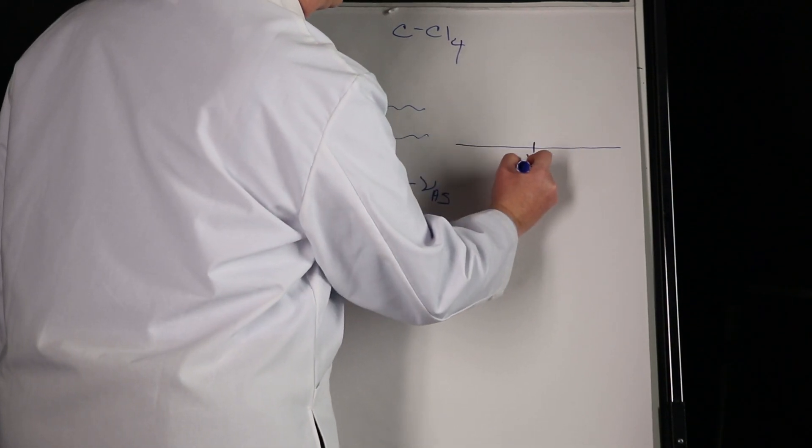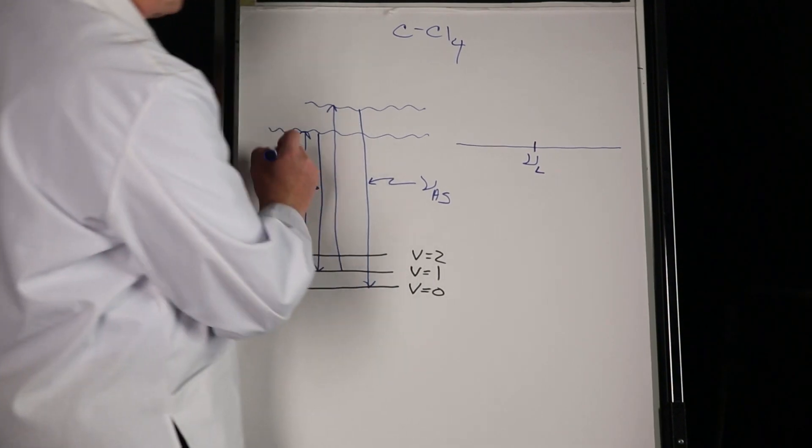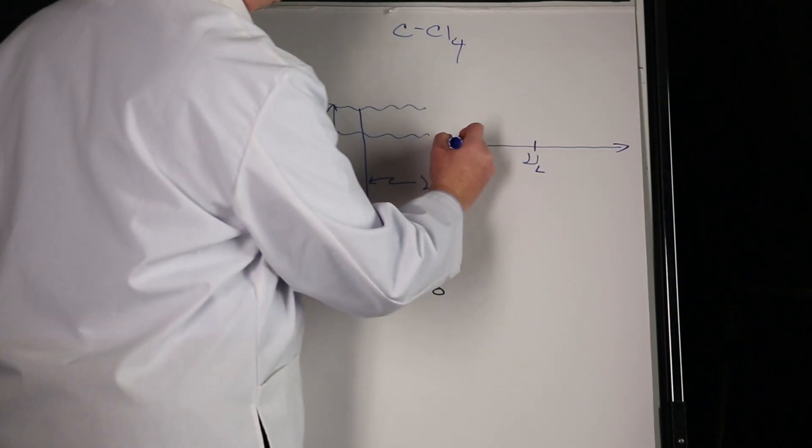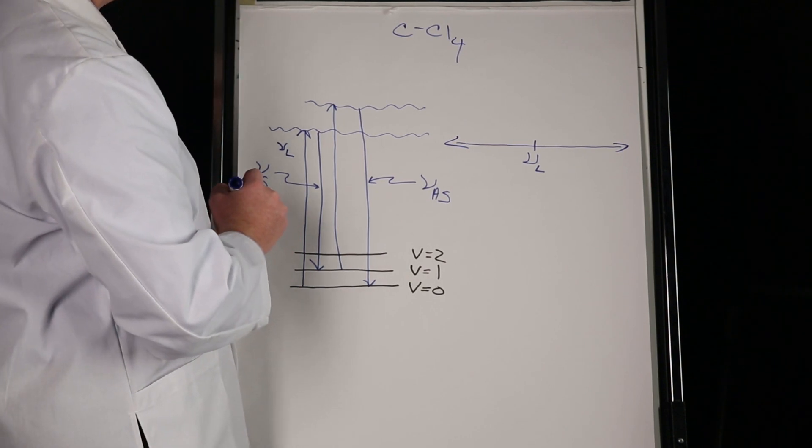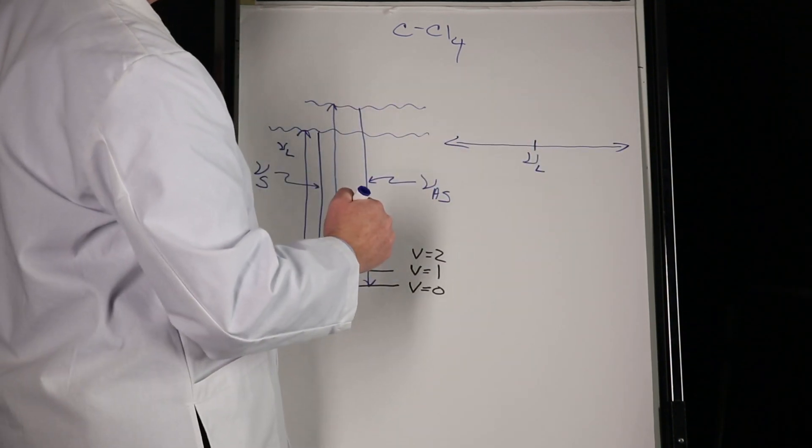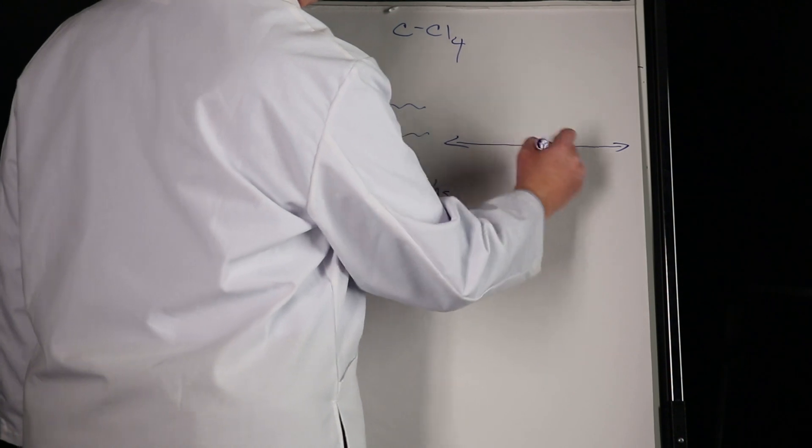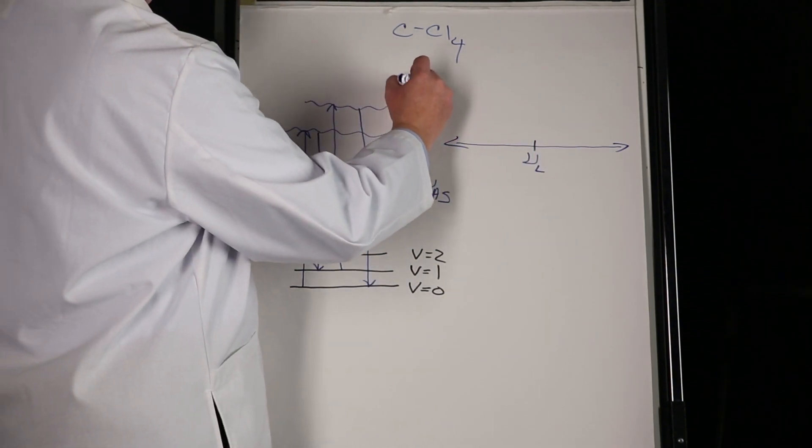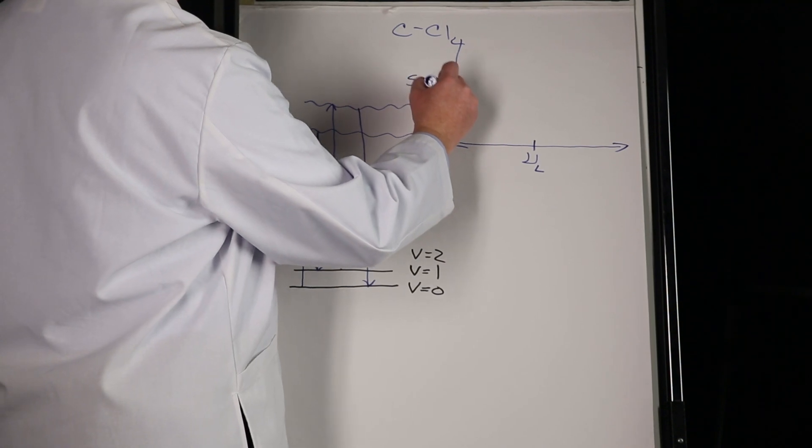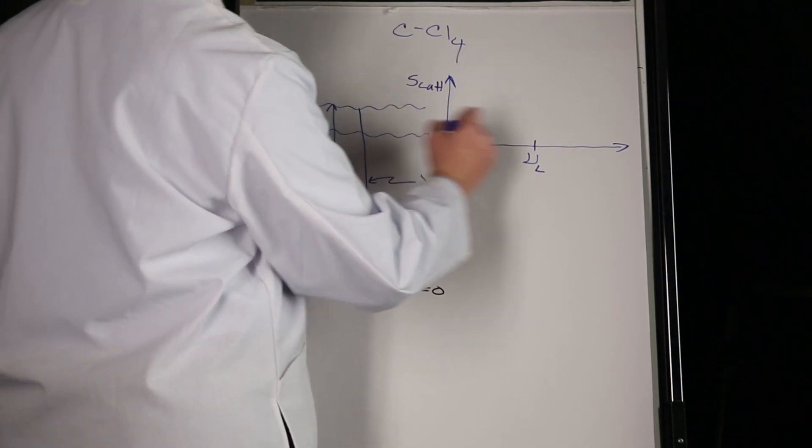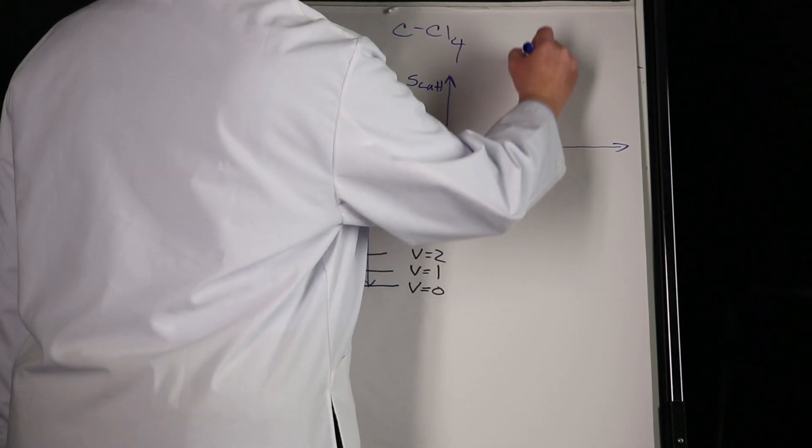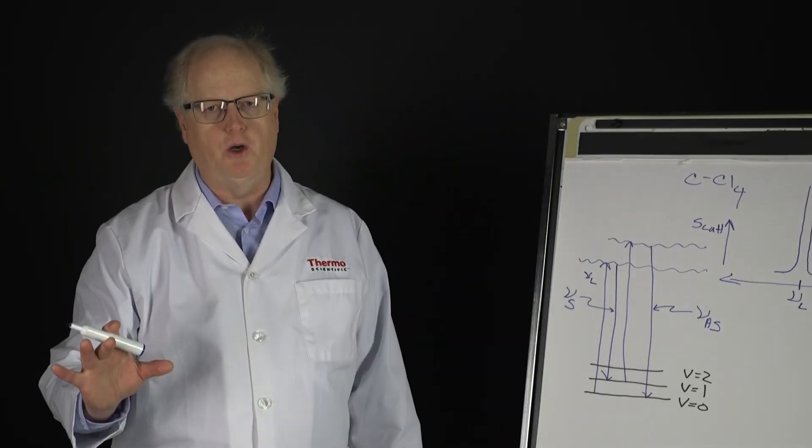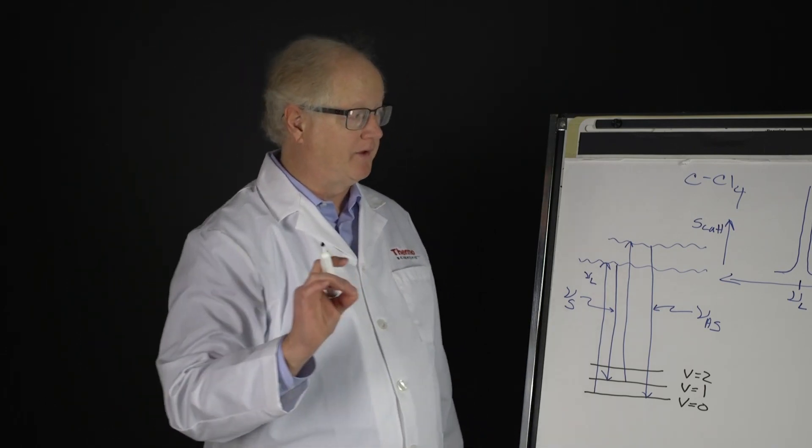Now if we look here, this is going to be the laser frequency, new sub L, on my plot. So what I'm plotting here is the energy going both ways, the spectrum, in a shifted format. If we look at the laser frequency and then we look at the scatter intensity in this direction, the first scatter we have is the Rayleigh scatter.